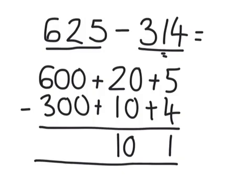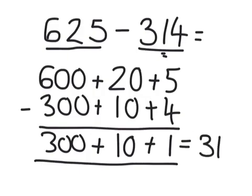And 600 take away 300 is 300. Then we add all those together. And this is 311.